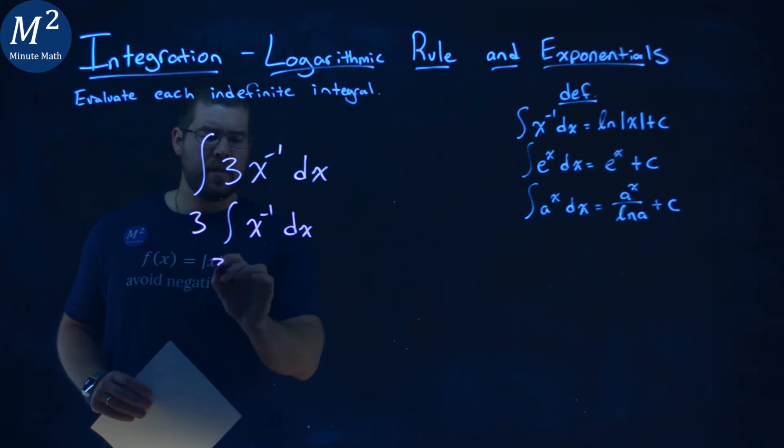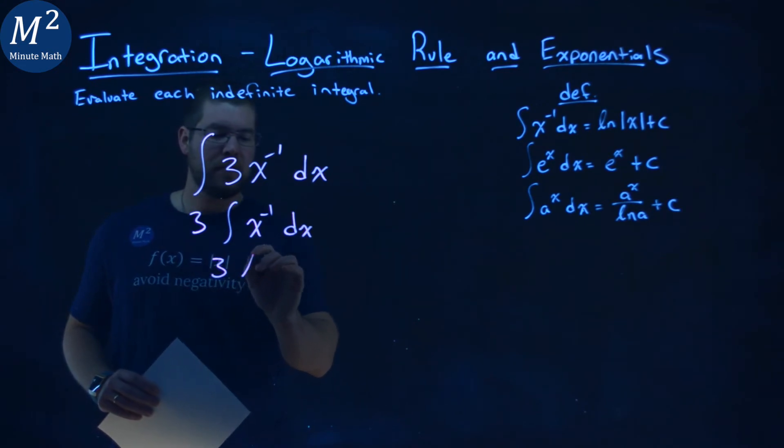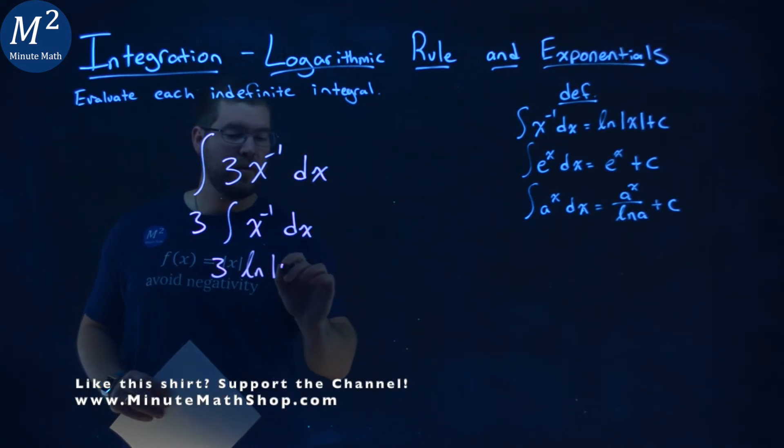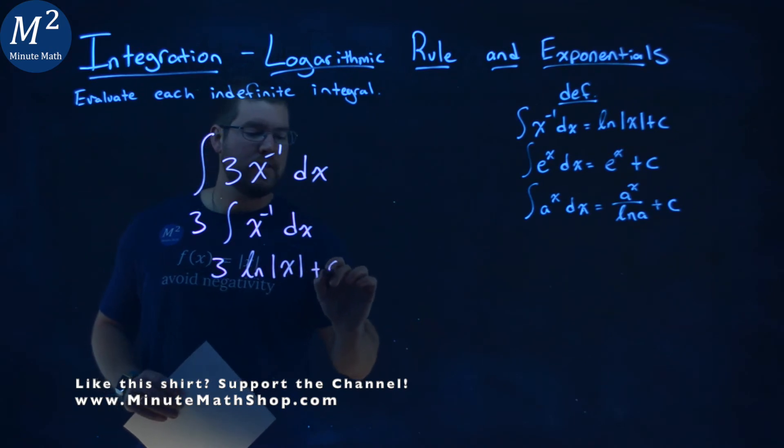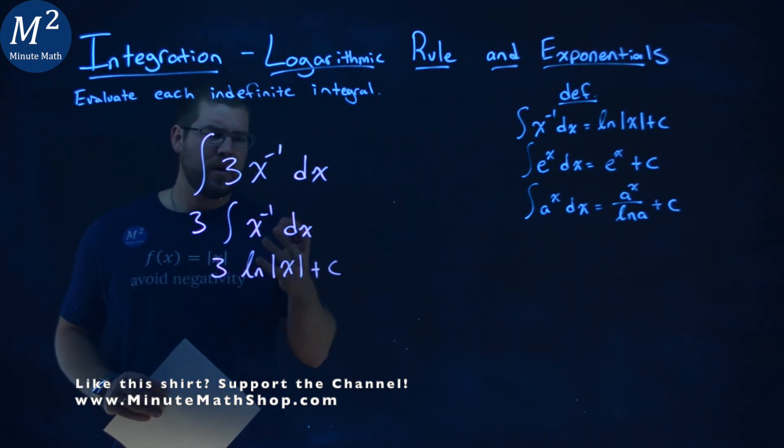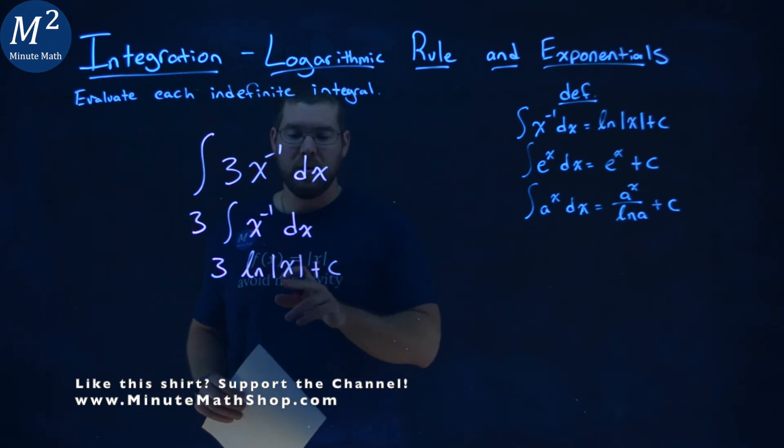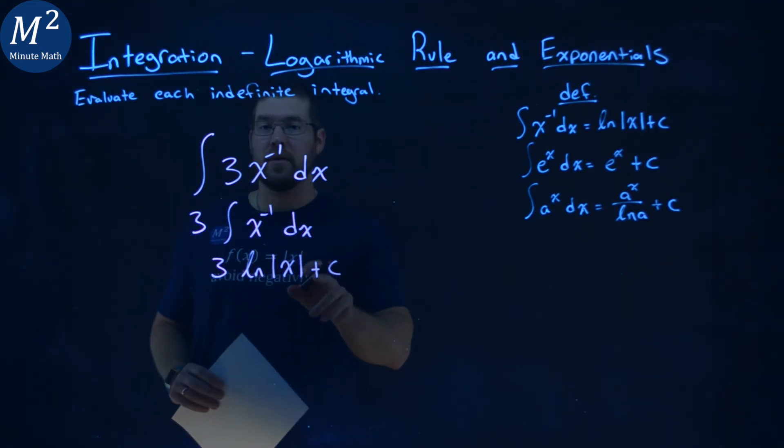So to do that, we then have 3 times the natural log of the absolute value of x plus c. Again, that 3 just comes down, and then our integral of the x to the negative 1 power is the natural log of the absolute value of x plus c.